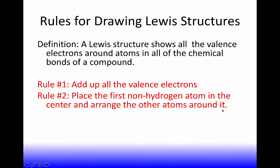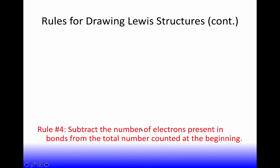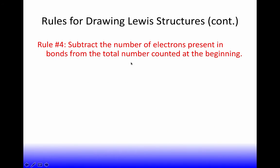Okay, rule number two, place the first non-hydrogen atom in the center and arrange the other atoms around it. Rule number three, draw lines, these are considered single bonds connecting all the atoms to the center. Rule number four, subtract the number of electrons present in the bonds from the total number counted at the beginning. I'm just going to read these because what you're going to do is you're going to watch the other video where I walk through step by step with four examples on how to apply these rules.